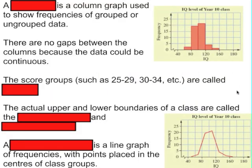Here we have two graphs displaying the same data. The first is a histogram. It's like a column graph and it's used to show frequencies of data which can be grouped or ungrouped. The difference between a histogram and a bar graph is that there are no gaps between the columns because we are usually dealing with continuous data.